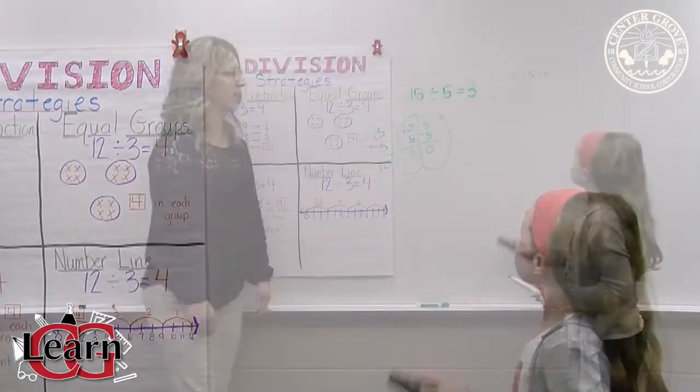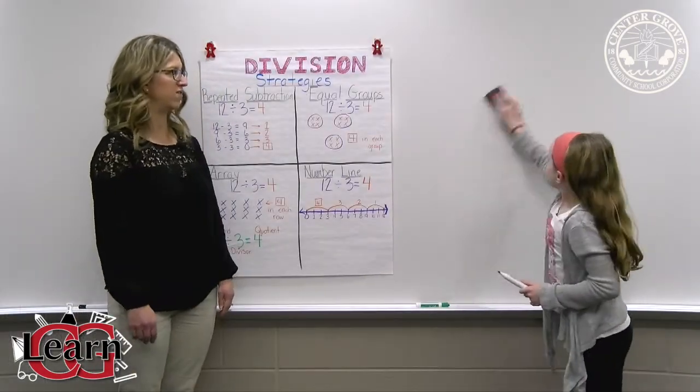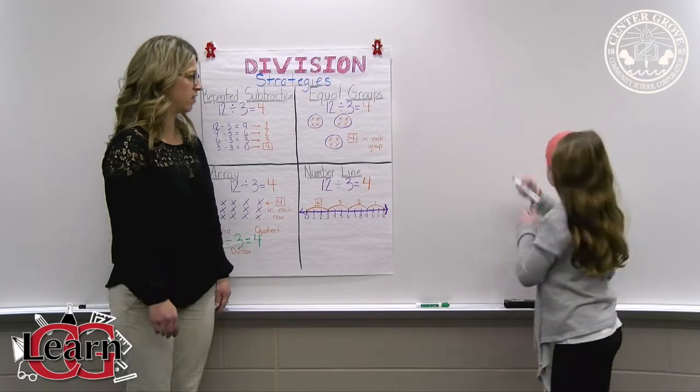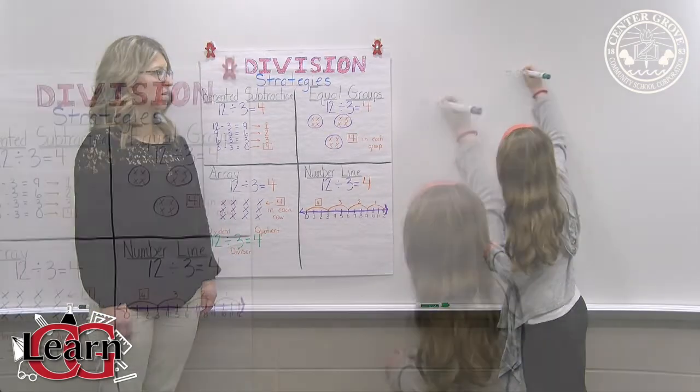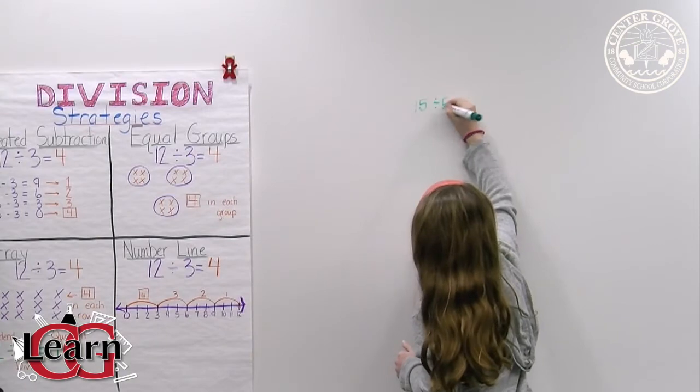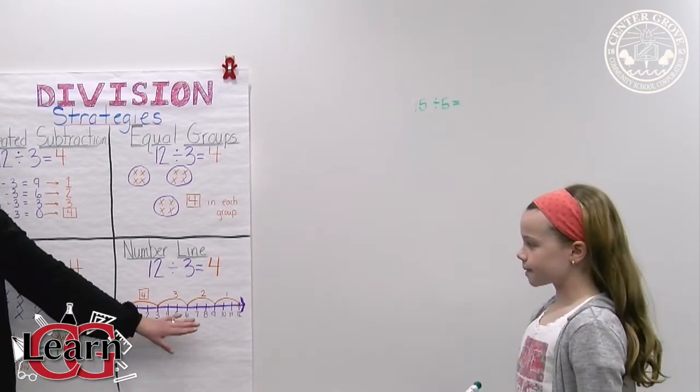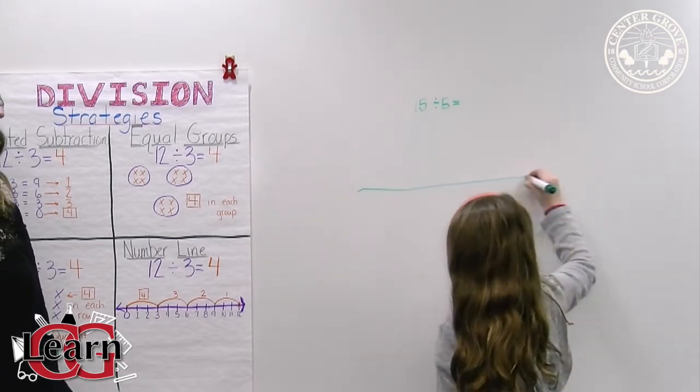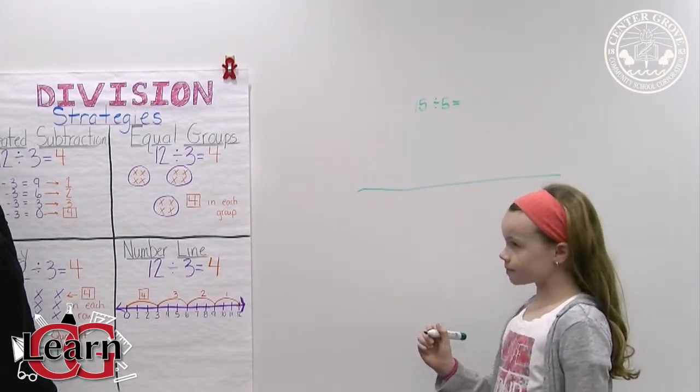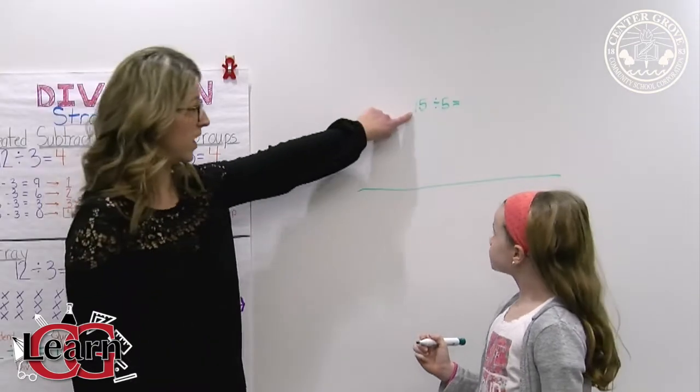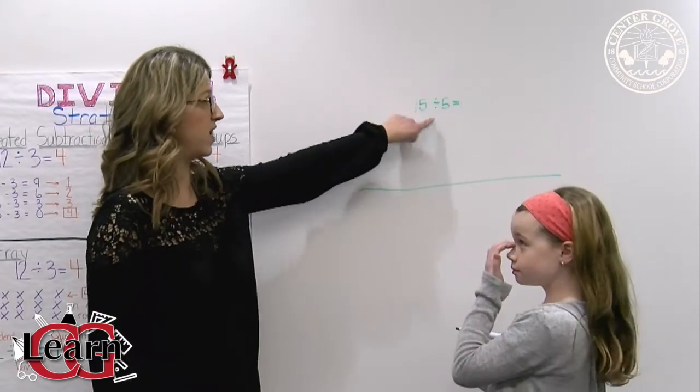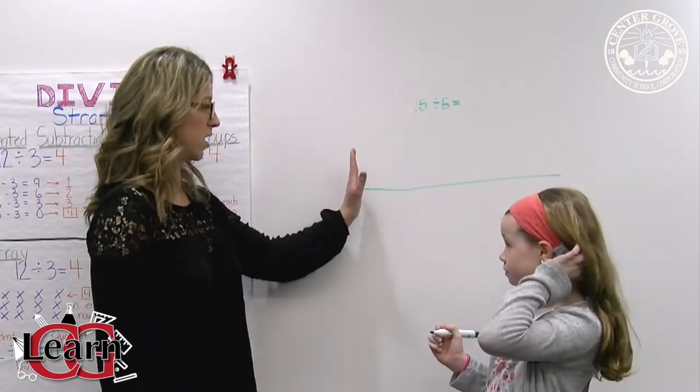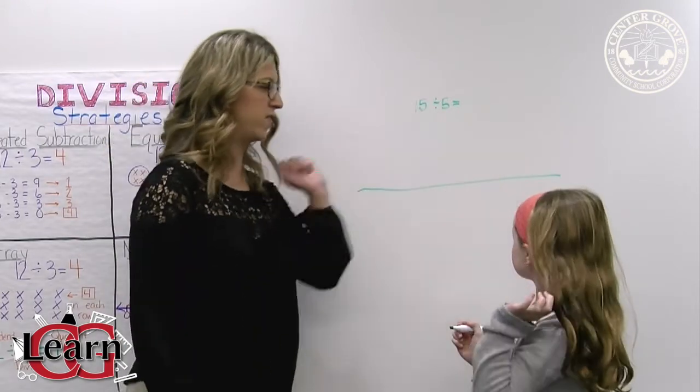Okay, the last strategy, again we're going to use 15 divided by 5. Okay, so the last strategy is the number line. So the first step is you have to draw the number line. Okay, and you are going to, since we're trying to figure out how many times 5 can go into 15, we're going to start with 0 and number all the way to 15.